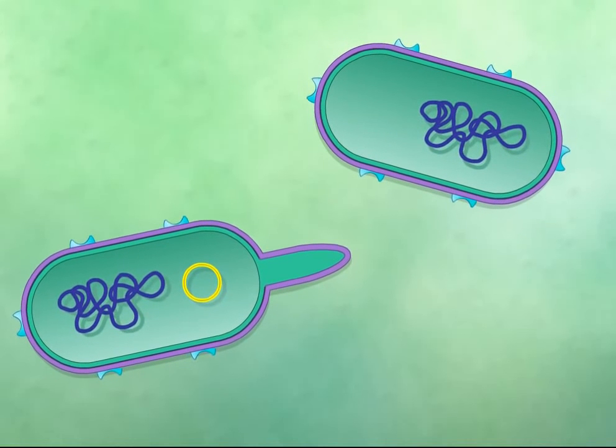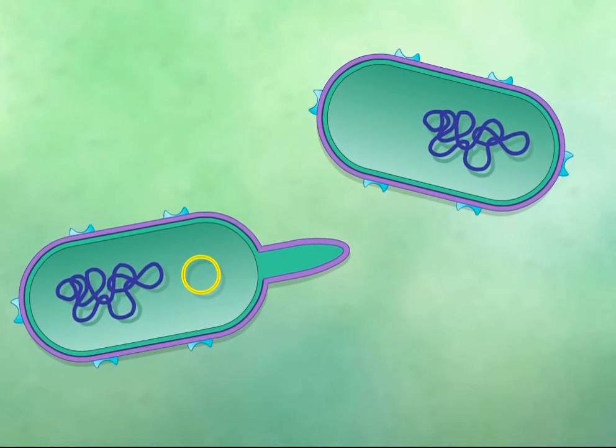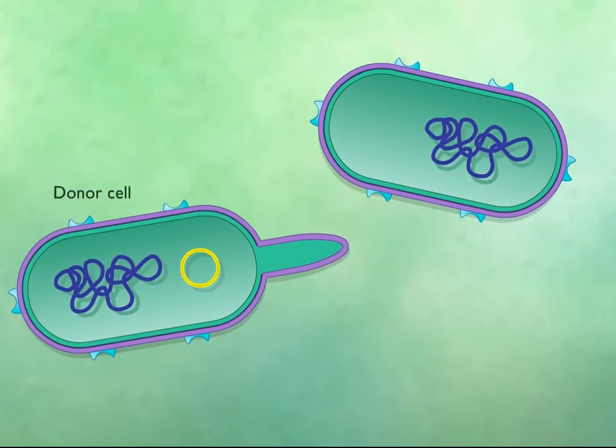Conjugation is a mechanism of gene transfer that requires direct contact between donor and recipient cells. F plus cells carry the F plasmid, enabling them to make an F pilus and act as a genetic donor. Recipient cells that lack an F plasmid are referred to as F minus.